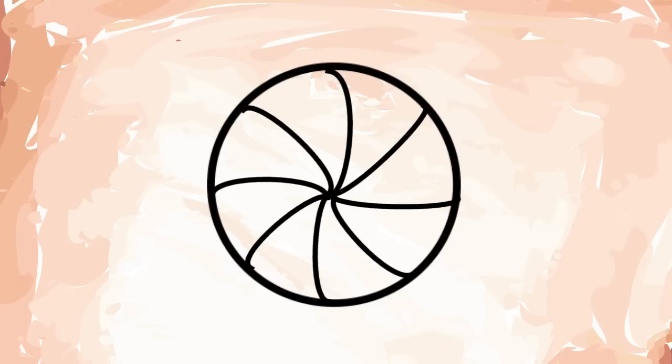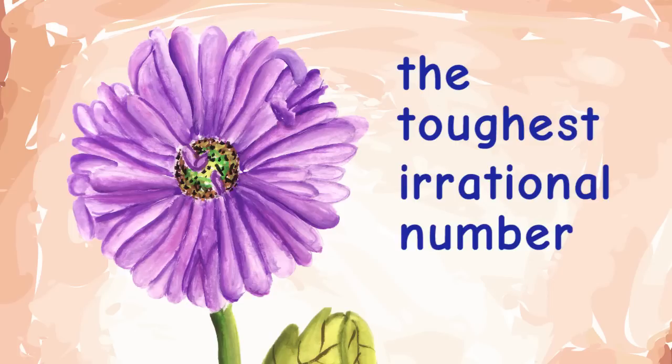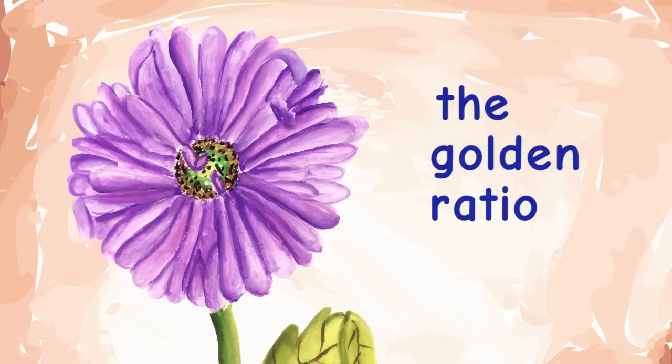The flower needs to bend the lines. The flower needs to choose the toughest irrational number. The flower needs the golden ratio.